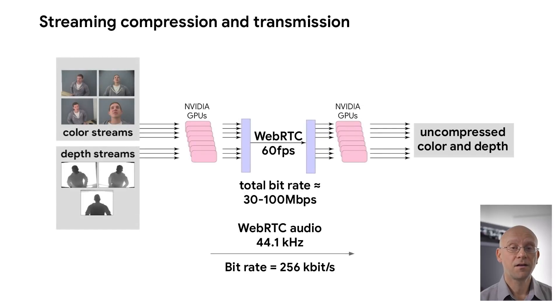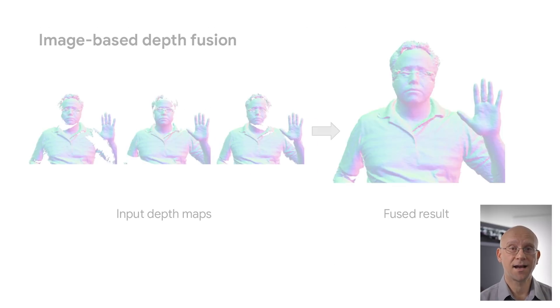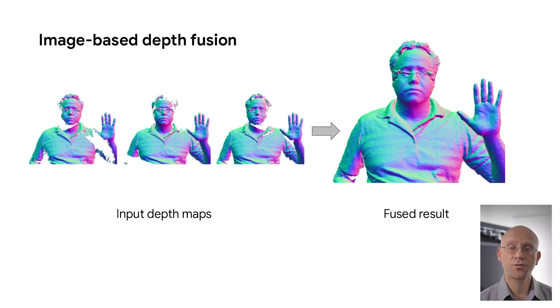In total, three depth and four color streams are sent over WebRTC using GPU video codec hardware. On the receiving side, after decompression, the system reprojects three depth images to the local subject's eye positions.